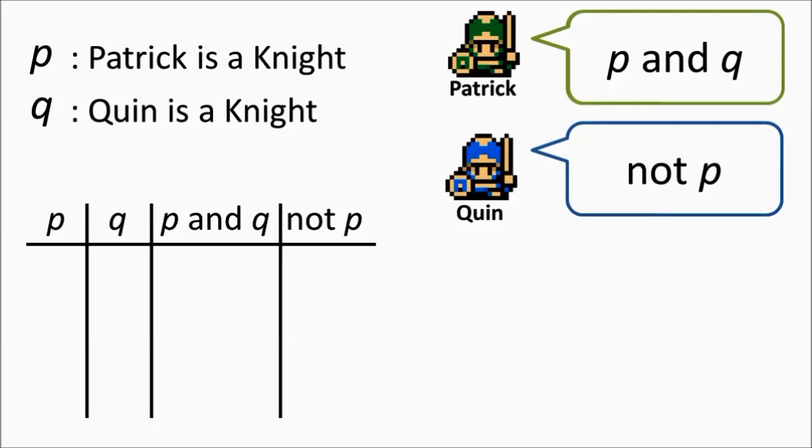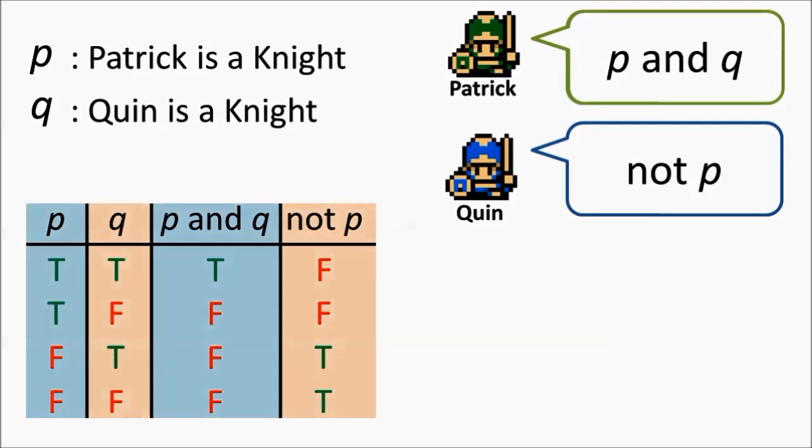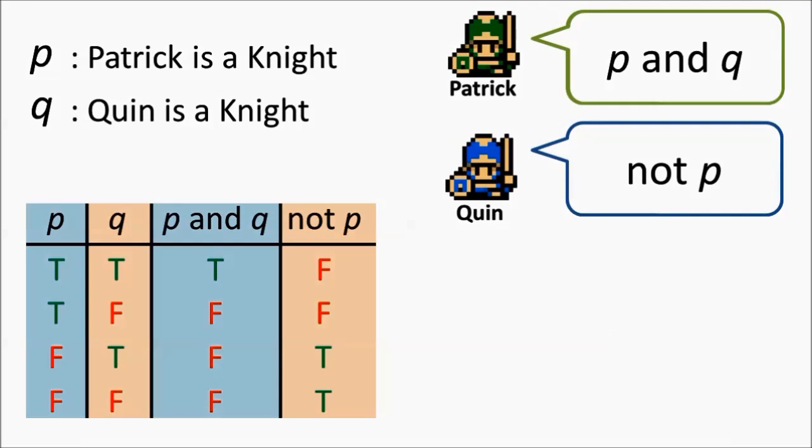Next, we write out a truth table, a table summarizing every possible combination of Knight and Knave, so that we can check the validity of each Islander's statements against their identity. In the first column, we have the statement P, Patrick is a Knight, and in the second column, we have the statement Q, Quinn is a Knight. In total, there are four different combinations of Knight and Knave that are possible. In order for all of the variables and statements to be consistent, the blue columns must agree with each other, and the orange columns must agree with each other.